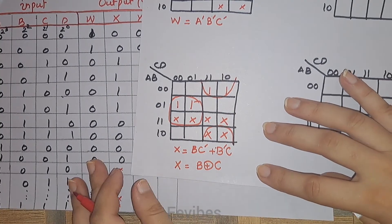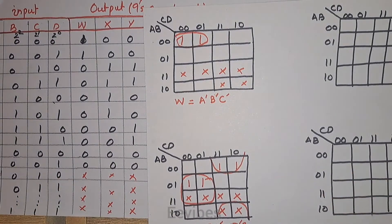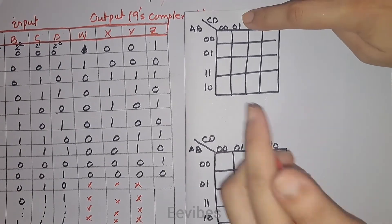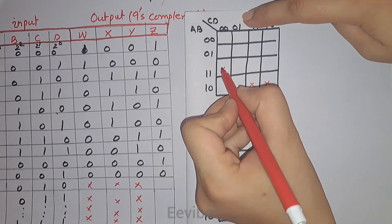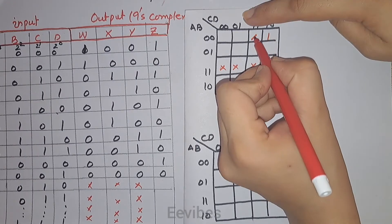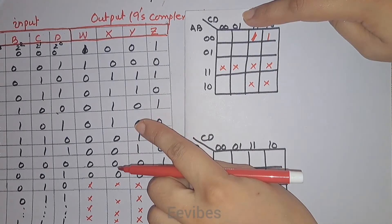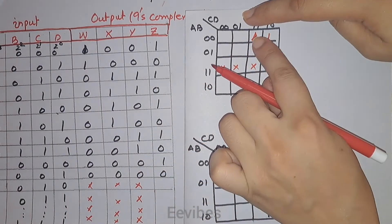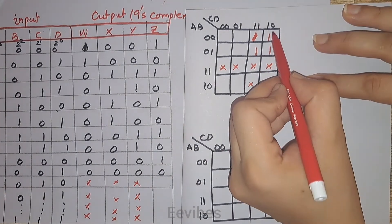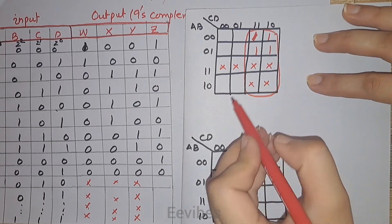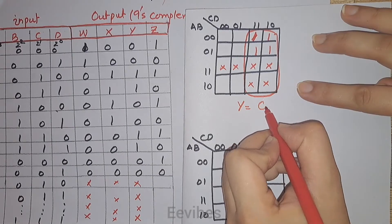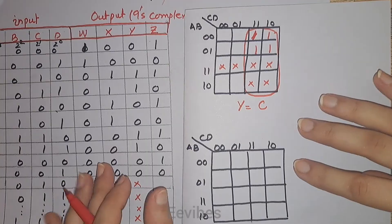For the output function Y, we again place the don't care conditions in the K-map. Min terms 2, 3, 4, 5, 6, and 7 are equal to 1. We combine these eight boxes, and since only C is not changing, the output function Y is simply equal to C.